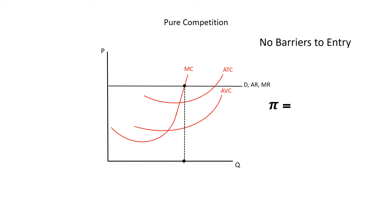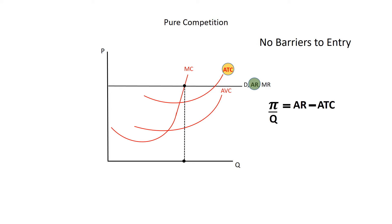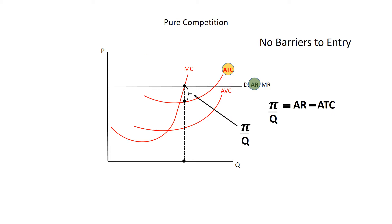Profit is the difference between total revenue and total cost. We're using the Greek letter pi to represent profits, since the Roman letter P is already used to represent price. We don't see total revenue or total cost on this graph, but we do see average revenue and average total cost. We can derive those values easily by dividing through by Q, and what we see is that profit over Q — per unit profit — is equal to average revenue minus average total cost. This distance represents per unit profits at the profit-maximizing level of output. As you can see, this firm is making a profit because average revenue exceeds average total cost.